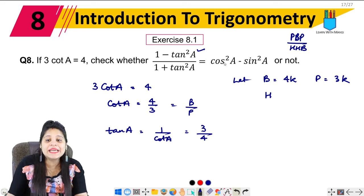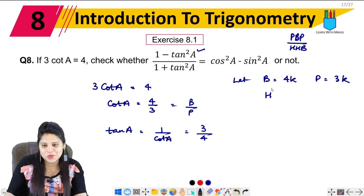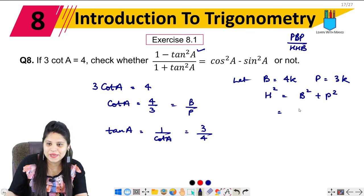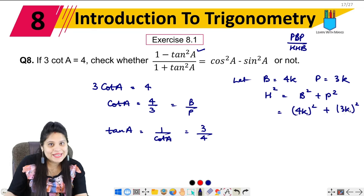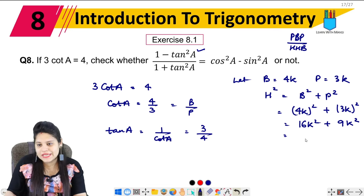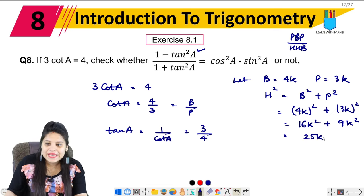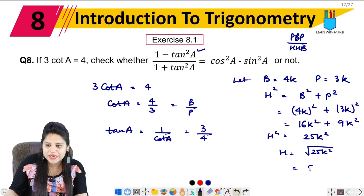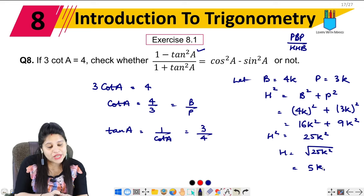For sin and cos, we need the hypotenuse. Hypotenuse² equals base² plus perpendicular², so H² = (4K)² + (3K)² = 16K² + 9K² = 25K². So H equals under root of 25K², which gives us 5K. So now we have the hypotenuse as 5K.